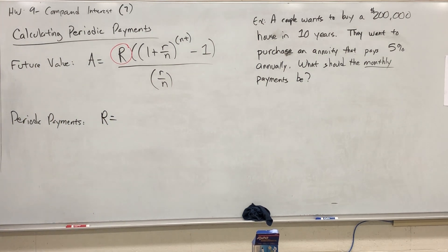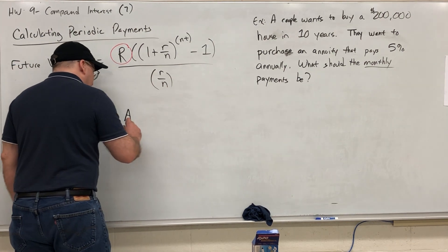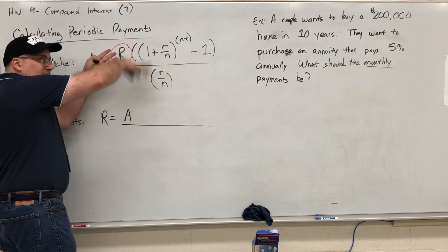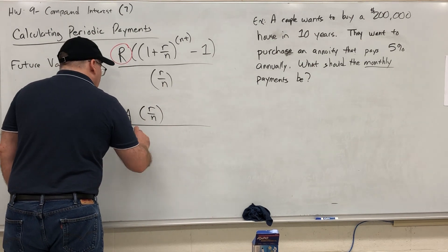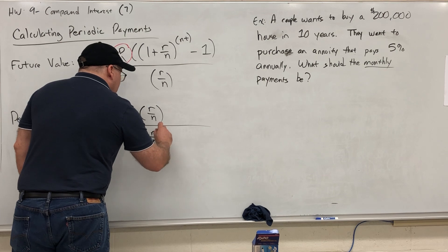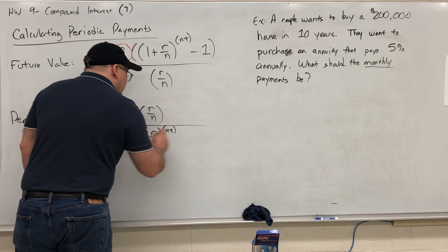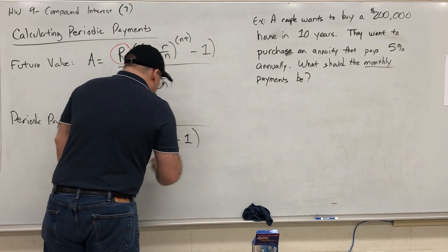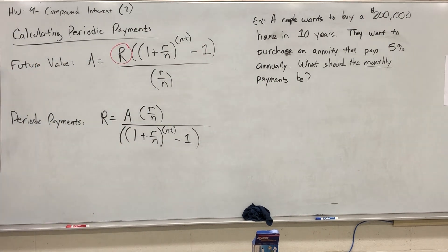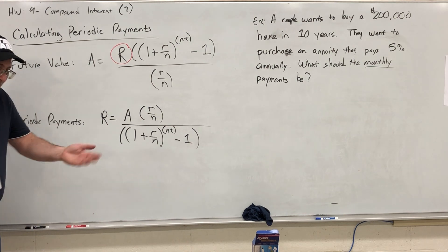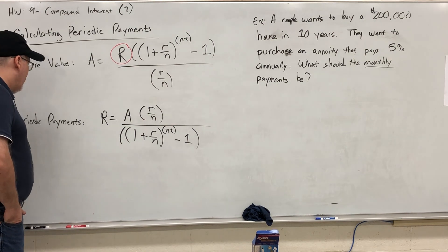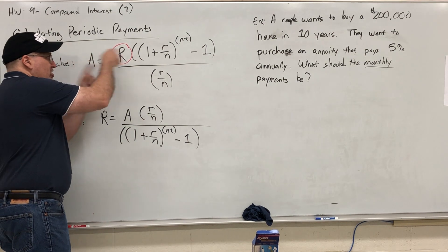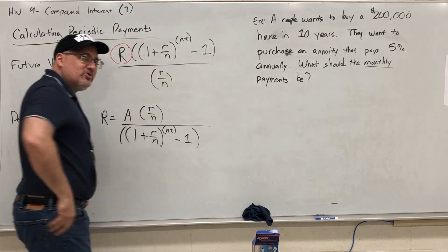Basically, you get the periodic payment formula. You just switch a couple of things. Number one, you switch the A and the R. And number two, you switch the top and the bottom of the fraction. Double parenthesis, one plus R over N, close parenthesis. It's not just hand-waving and it's not just magic. The algebra dictates that that's what you would do. But visually speaking, the formula for periodic payments, you just switch the location of the A and the R, and then you reverse the positions in the fraction.